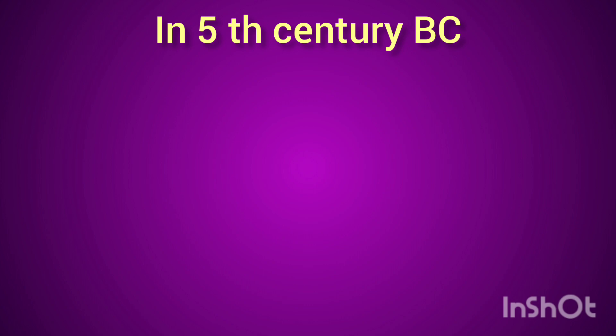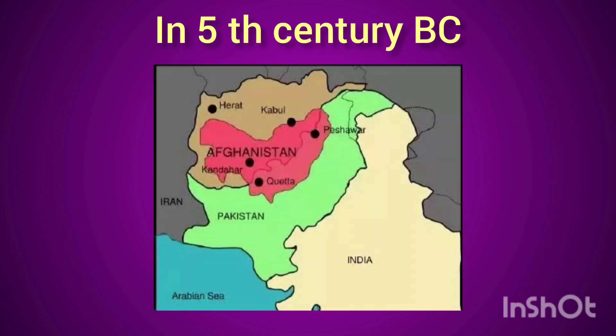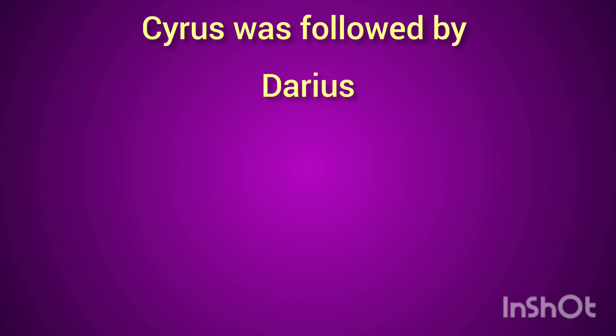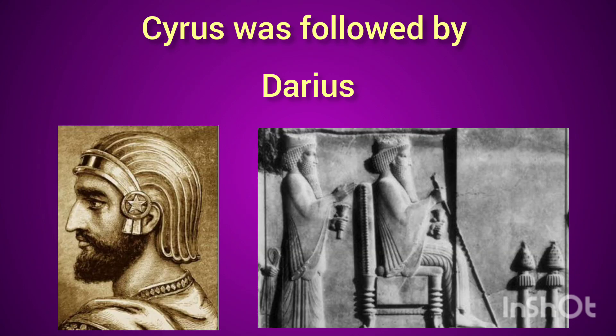In the 5th century BC, Persia — that is modern Peshawar in Pakistan — was ruled by Cyrus. He was followed by Darius.